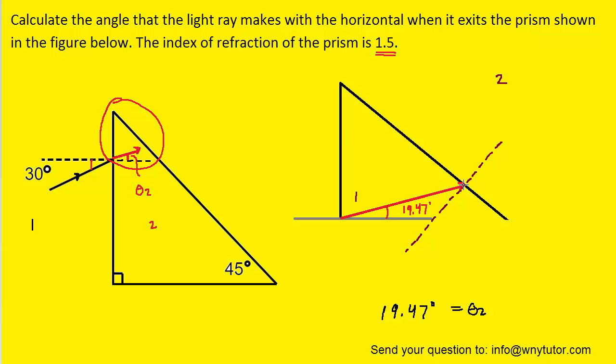So once this light beam strikes the interface, again it's going to refract, and so it might look something like this. What we want to do is figure out theta 2. In order to do that, we actually need to back up and find this angle right here. When using Snell's Law, we need to use the angle that is actually contacting that normal line. So we need to find that angle.